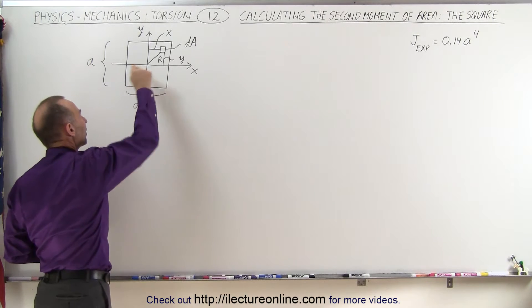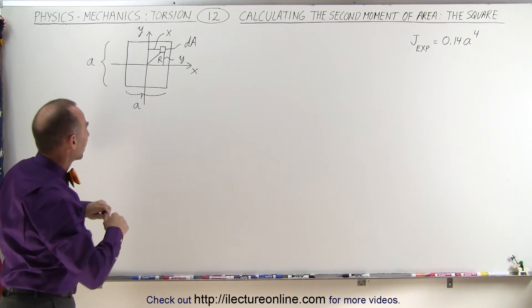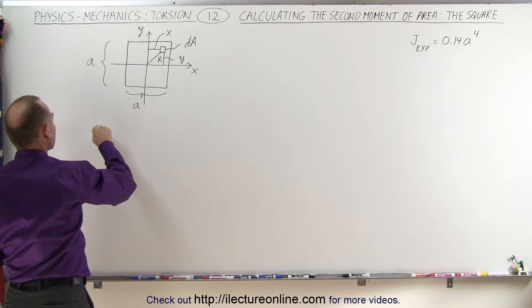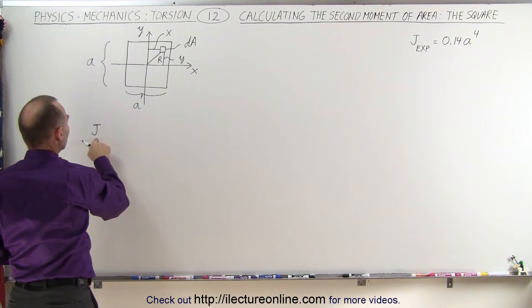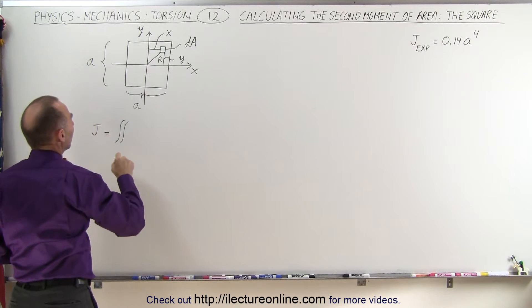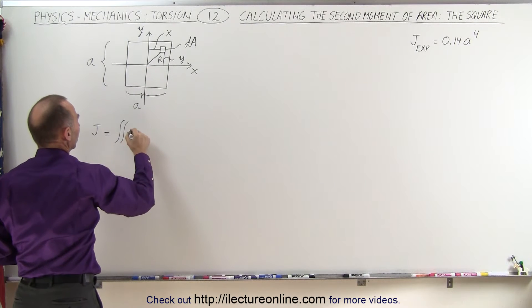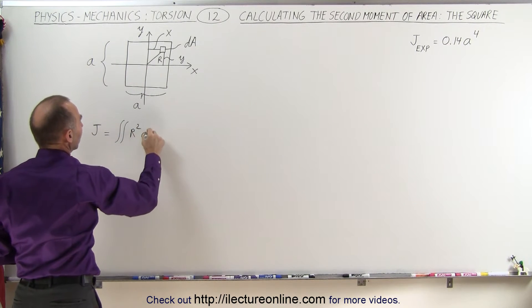Notice that we picked a point at the very center, and we're going to calculate the following integral. We're going to say that the torsional constant J is going to be equal to the double integral of the distance from the central part of the square, which is R. We have to square that and multiply that times dA.